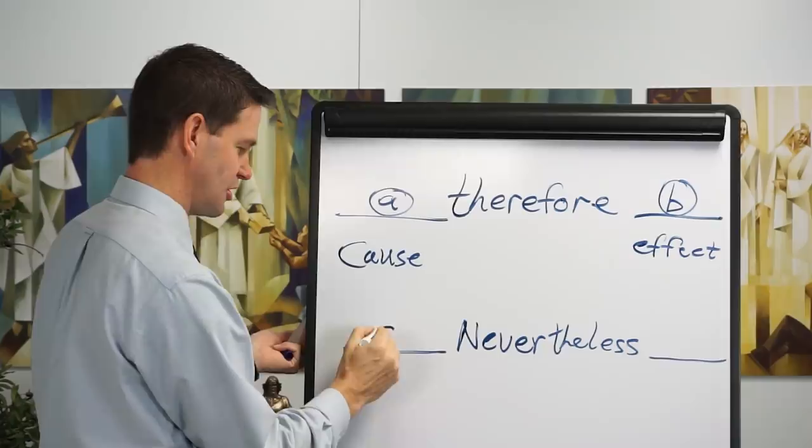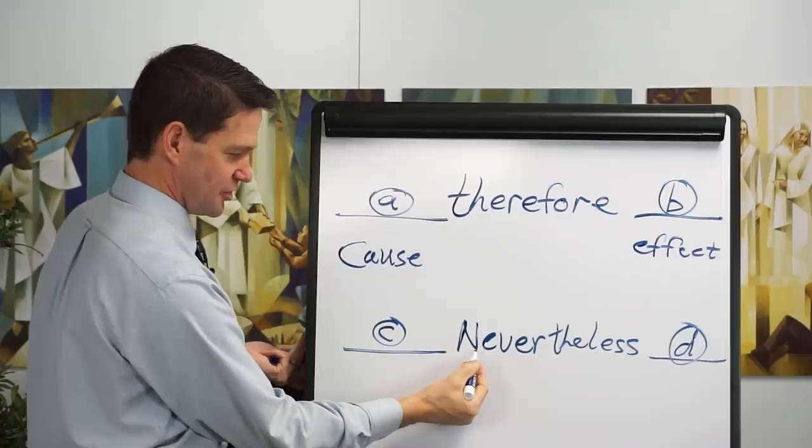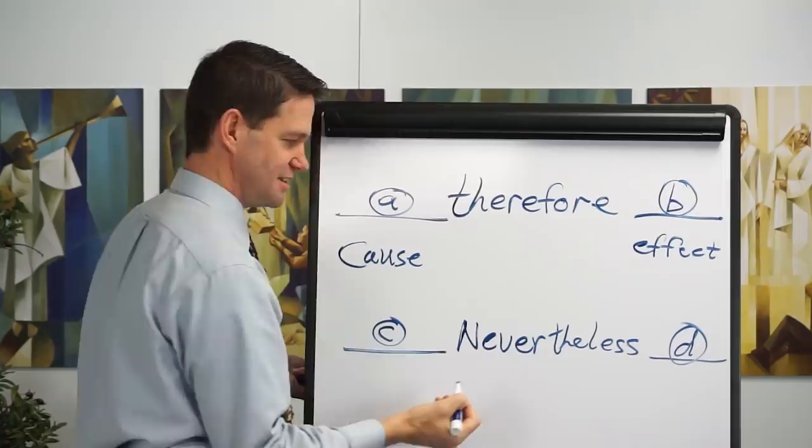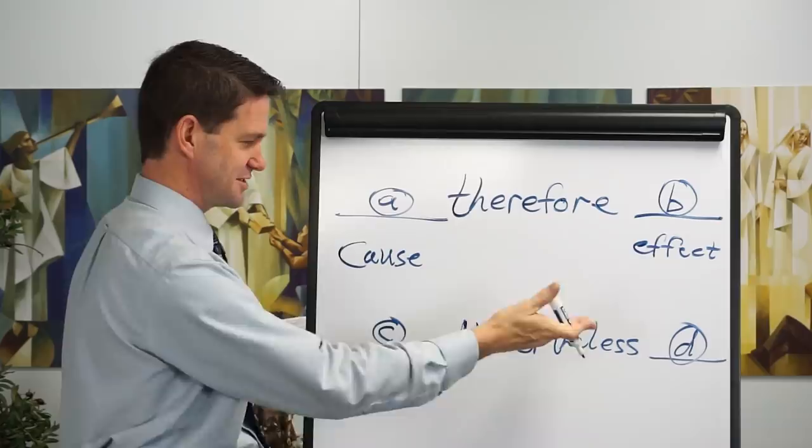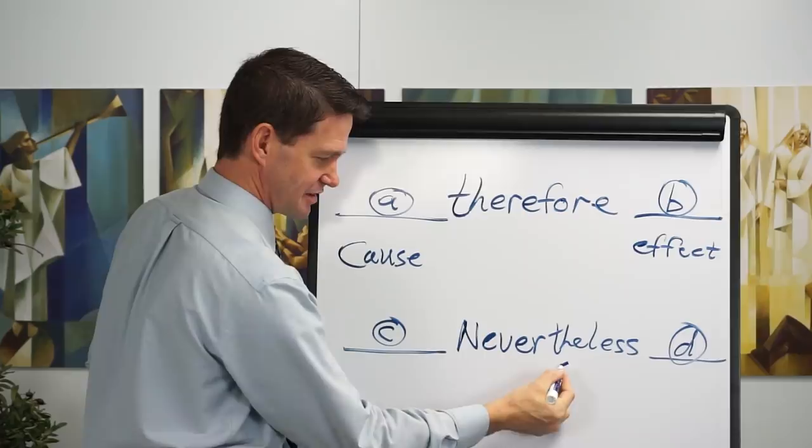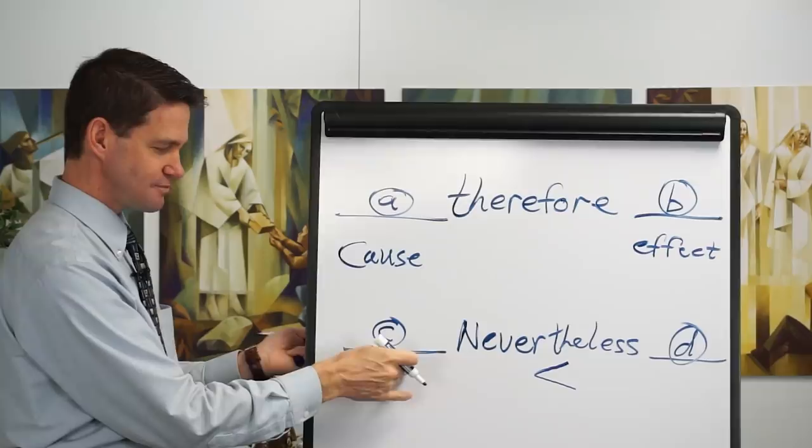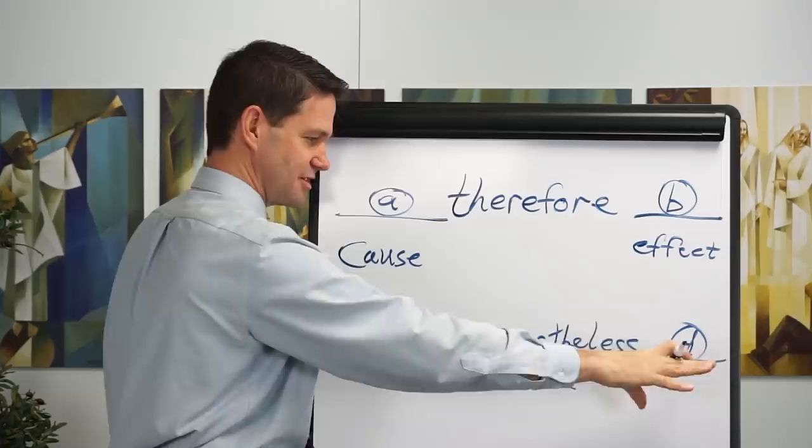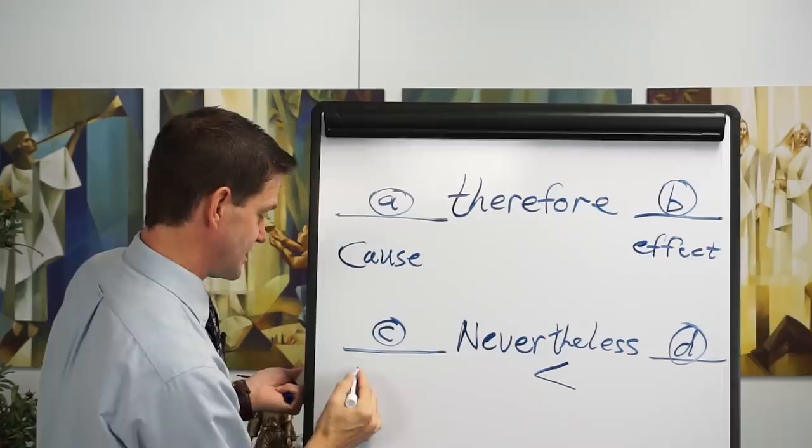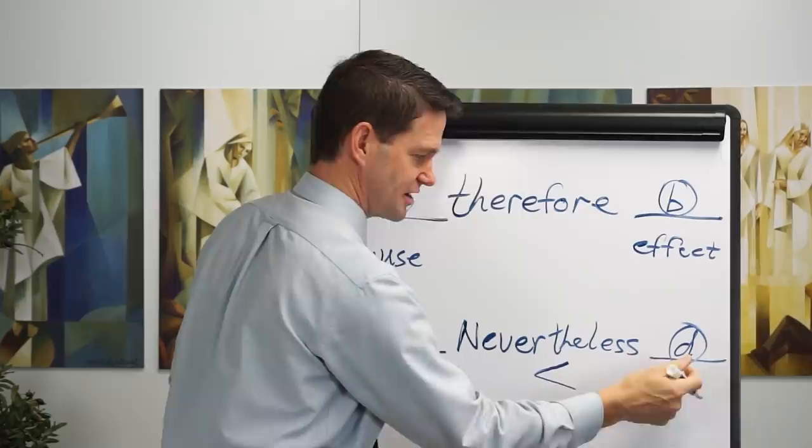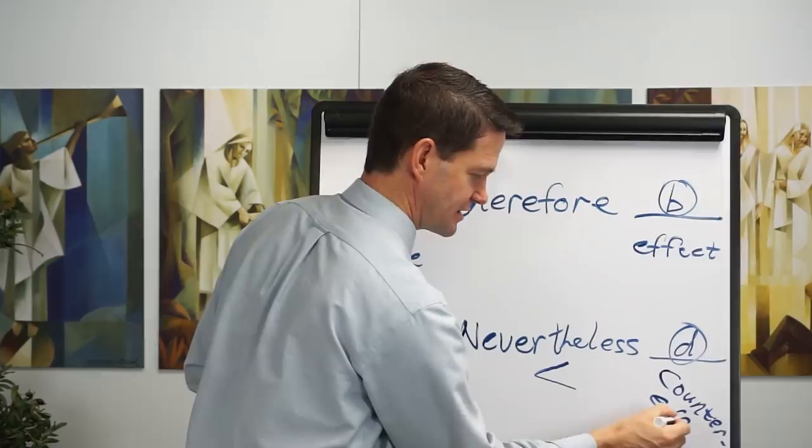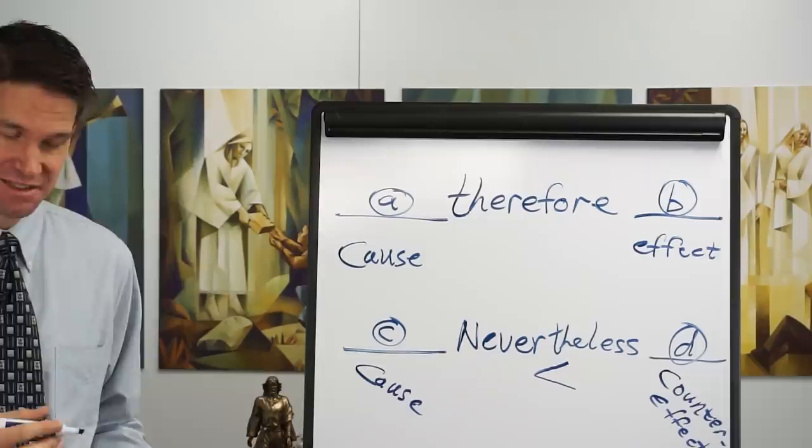Nevertheless forms a very interesting grammatical connection between phrase C and phrase D. You'll notice it's a simple made-up word, nevertheless, could have just as easily been always the greater, but this is simpler. Nevertheless, there are a couple of simple ways to look at this. You could put a less than sign. C is always going to be less than D, because D is nevertheless. It's always the greater. You always put the greatest emphasis on what follows. It's as if this were a cause, but over here it's not an effect, it's actually a counter effect. It's not what you would have seen coming.